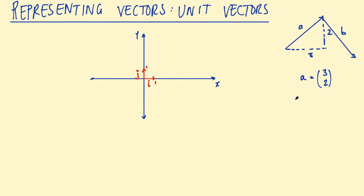These two unit vectors we can use to represent any other 2D vector. So this vector we labelled a we could say is 3i plus 2j — that's saying we've gone 3 lots of the unit vector in the x direction and 2 lots of the unit vector in the y direction. You might ask why bother with this. This is really useful if you want to work with vectors algebraically, like creating an equation and adding a bunch of vectors. You'll quickly see that this notation is really useful.